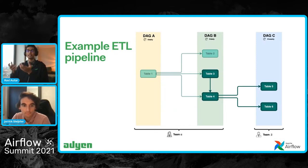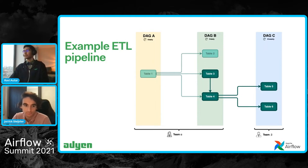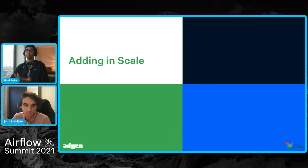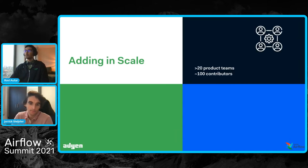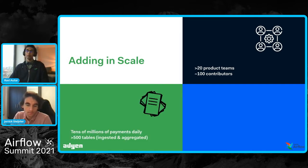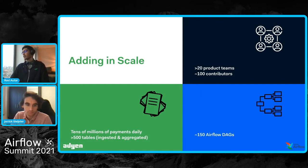In practice, this becomes a really tedious operation with lots of manual work. In this simple example it's still manageable, but if we consider the scale at which we work at AdGen, it gets more complicated. We have 20 different product teams with over 100 contributors, we work with tens of millions of payments on a daily basis that make their way to 500 ingested and aggregated tables, and all of these tables are managed through almost 150 Airflow DAGs.